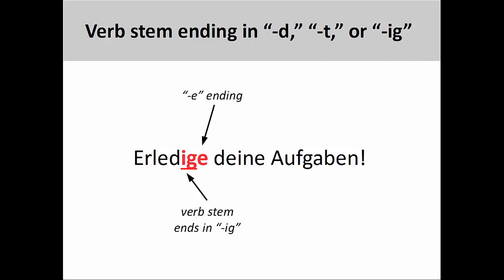Or as you see here, since the verb stem in erledigen, meaning 'to complete' or 'to carry out,' ends in ig, we must add an e to the imperative form: 'Erledige deine Aufgaben,' 'finish your tasks.'